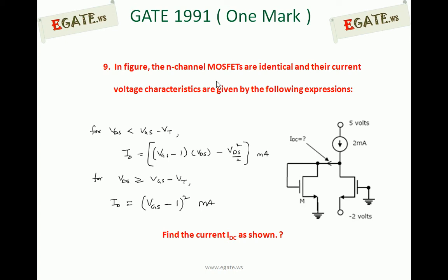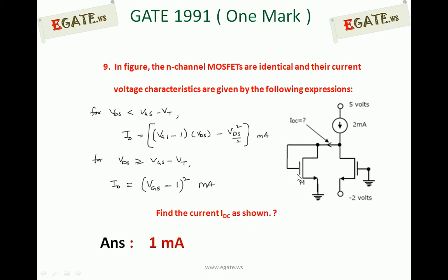Find the current IDC as shown in the figure. This is the current we need to calculate — IDC. The correct answer for this one is 1 mA.